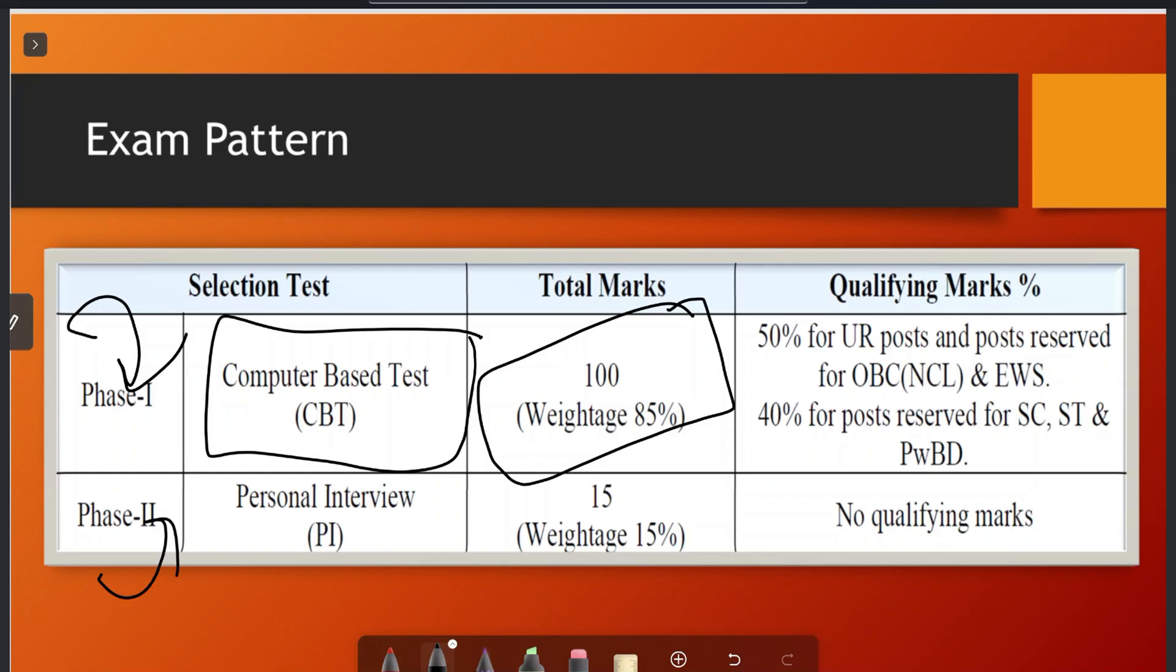CBT, which is 100 marks, you need for unreserved category 50 percent. And SC, ST and other reservations will be 40 percent qualifying marks.